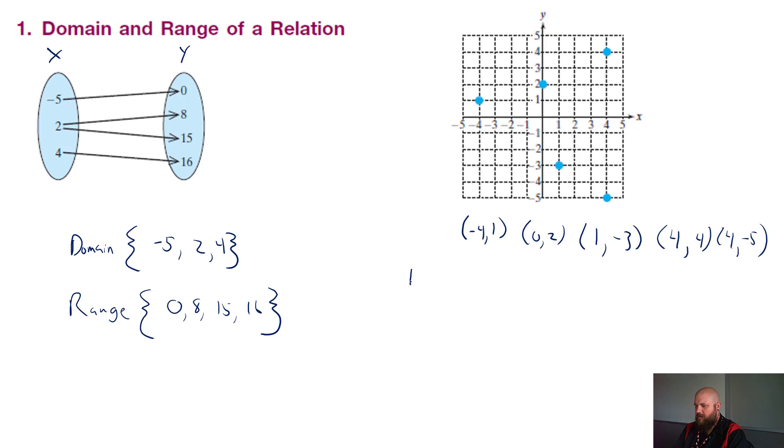So our domain is all our x values. Remember, x comma y. So we have negative 4, 0, 1, 4. And if we need to write that 4 again, hmm, nah, if you wrote it in there once, you should be good to go.